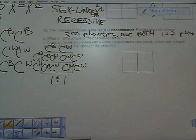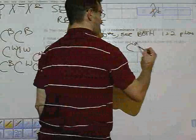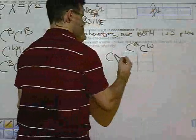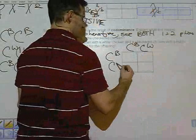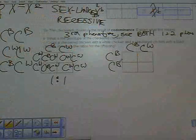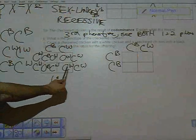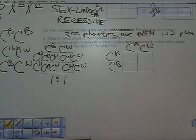The next one says cross a checkered chicken with a black chicken. Checkered up here, black on the side. And basically you're going to get the same results, only instead of having two C^Ws, you're going to have two C^Bs.